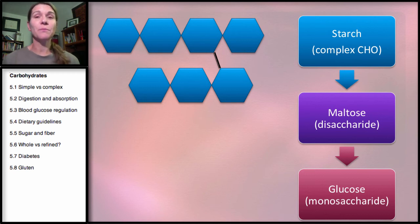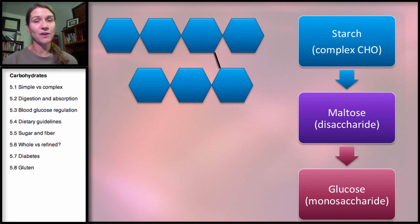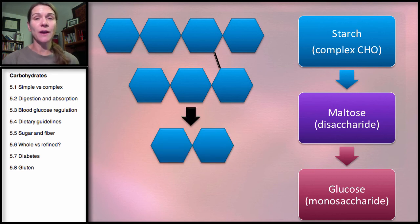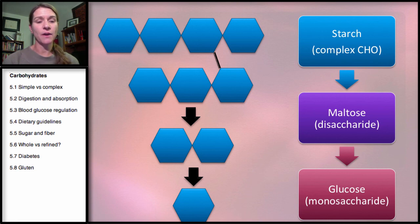Starch is the plant storage form. So when we eat plant food, we're eating the plant storage form of glucose. When we consume this complex carbohydrate, starch will break down to a simple carbohydrate — a maltose or disaccharide — and even further to glucose, a monosaccharide. So we have starch (the complex carbohydrate), then maltose (a disaccharide), and then glucose (a monosaccharide).